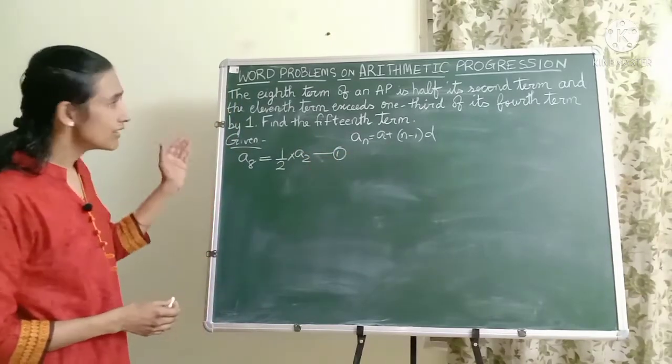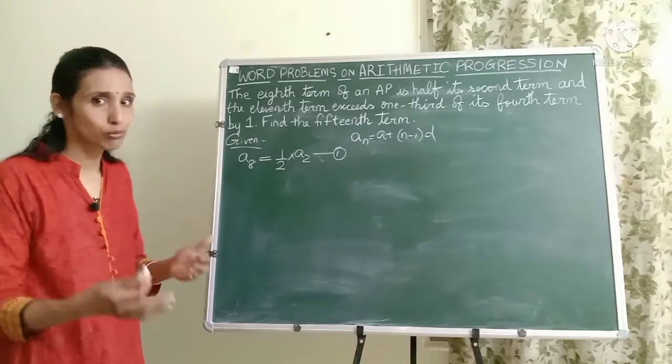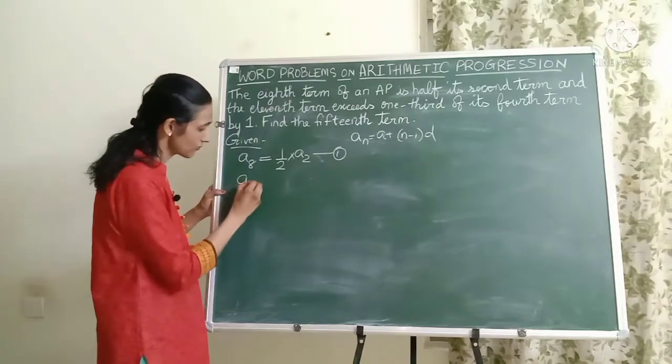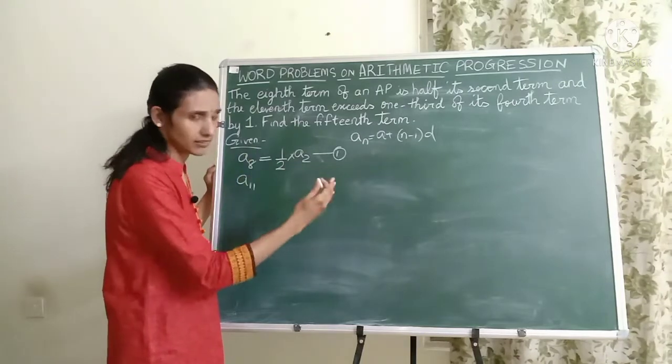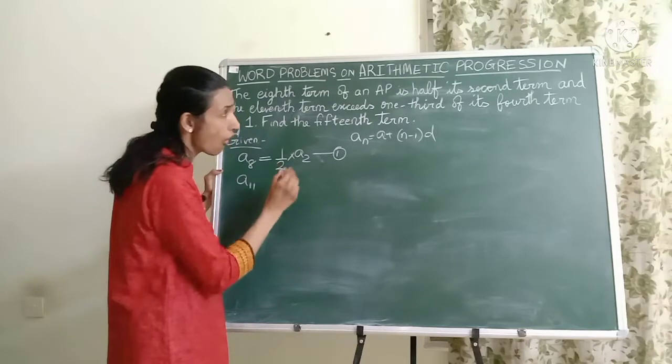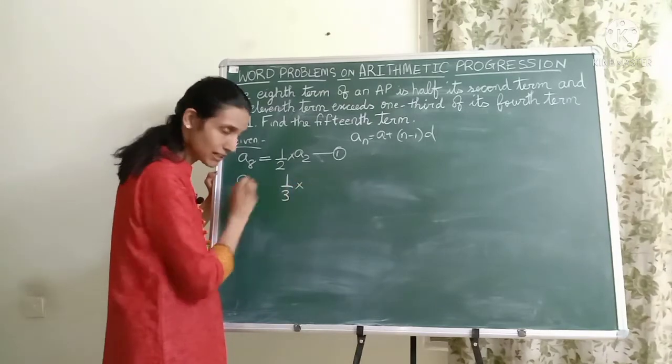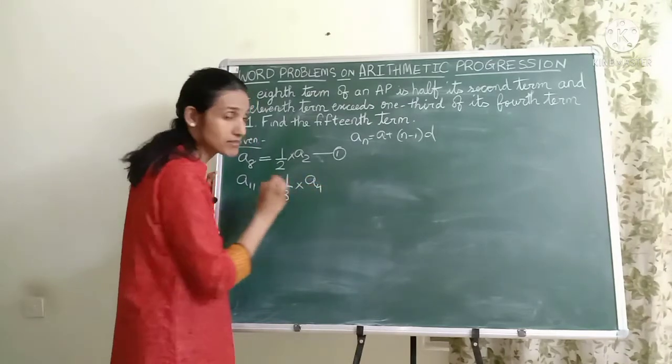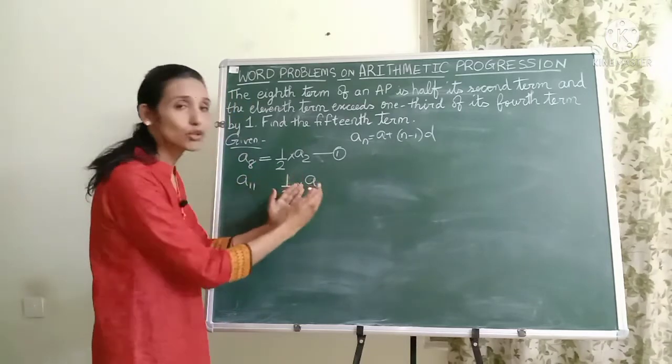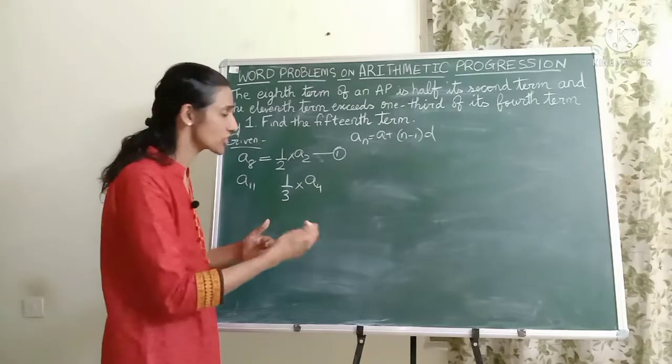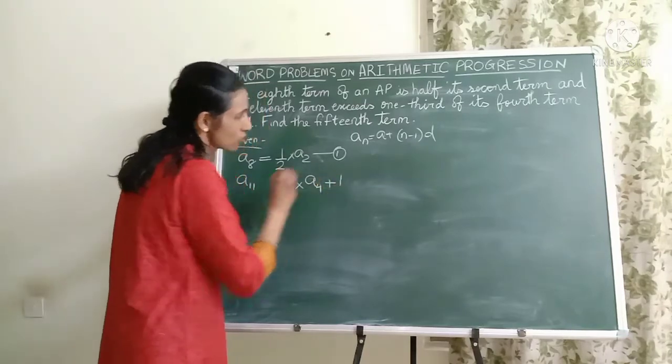Now the 11th term exceeds one third of its fourth term. So the 11th term is A11. That exceeds one third of its fourth term, so one third multiplied by the fourth term which is A4. So the 11th term is more than one third of the fourth term by how much? By one.